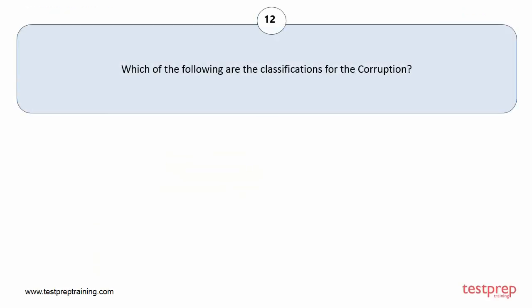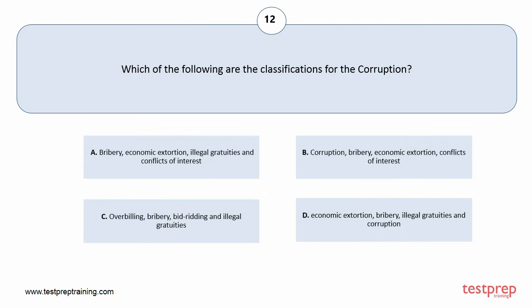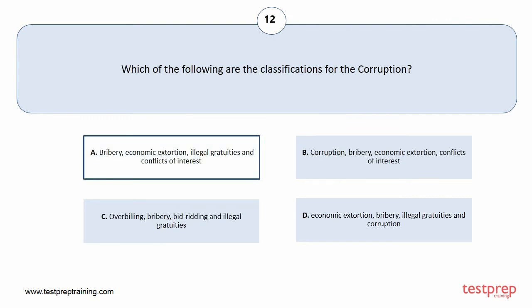Question number 12. Which of the following are the classifications for corruption? Your options are A. Bribery, economic extortion, illegal gratuities and conflicts of interest; B. Corruption, bribery, economic extortion, conflicts of interest; C. Overbilling, bribery, bid rigging and illegal gratuities; D. Economic extortion, bribery, illegal gratuities and corruption. The correct answer is option A.